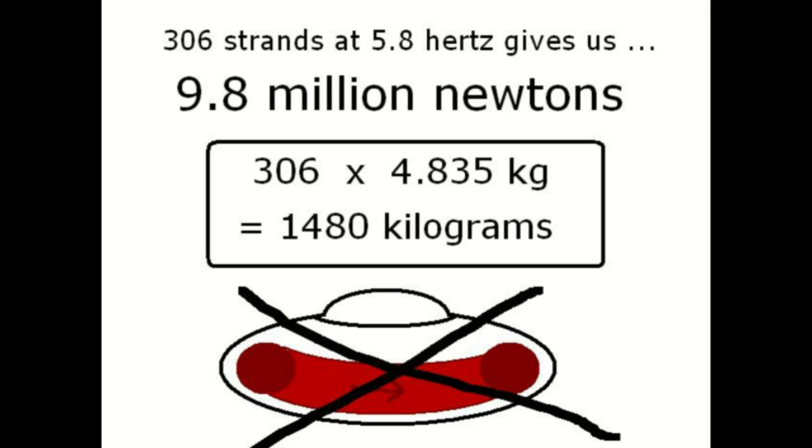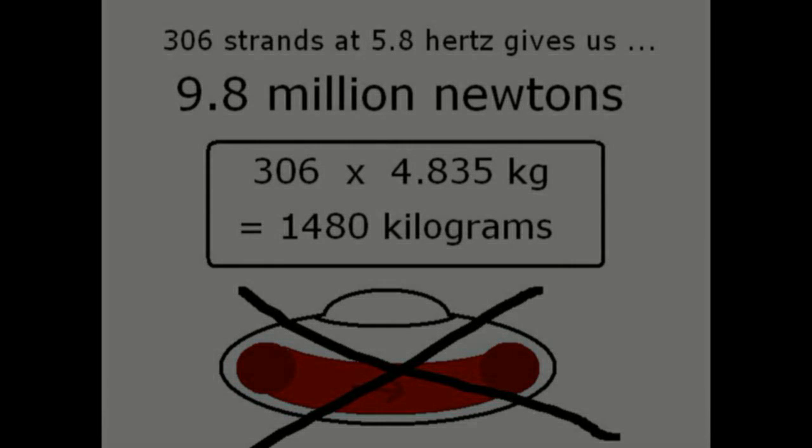Since we can only utilize half the ring at best and the vectors on that half are divergent and our method of redirecting them is not 100% efficient we're going to have to have a much heavier ring. Heavier enough to rule out steel wire. A ring that's half the weight of the entire craft just doesn't seem right.